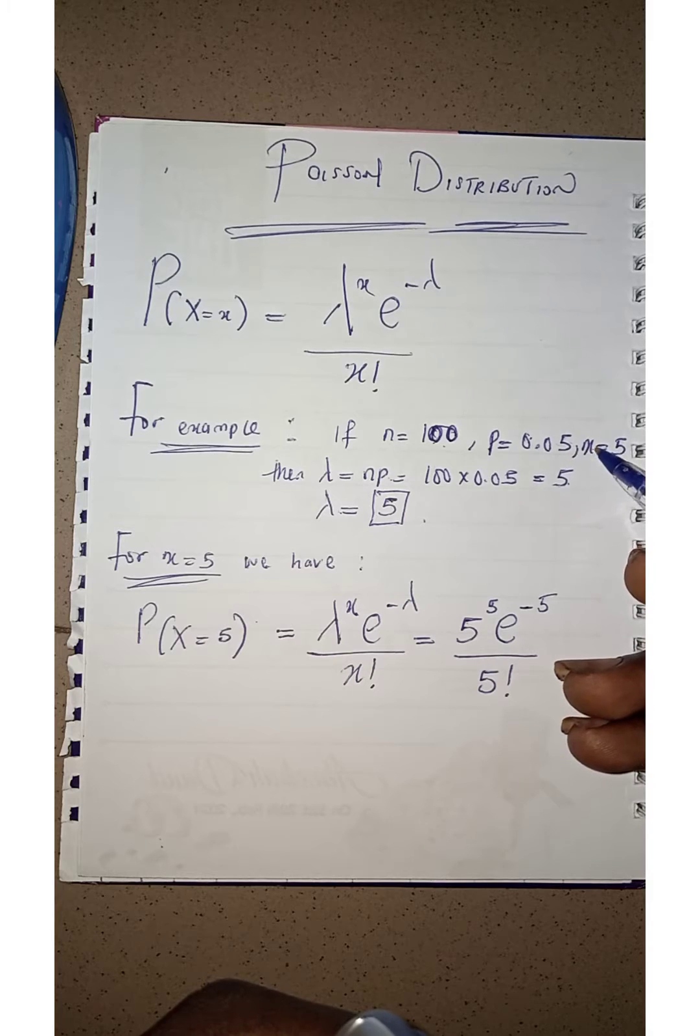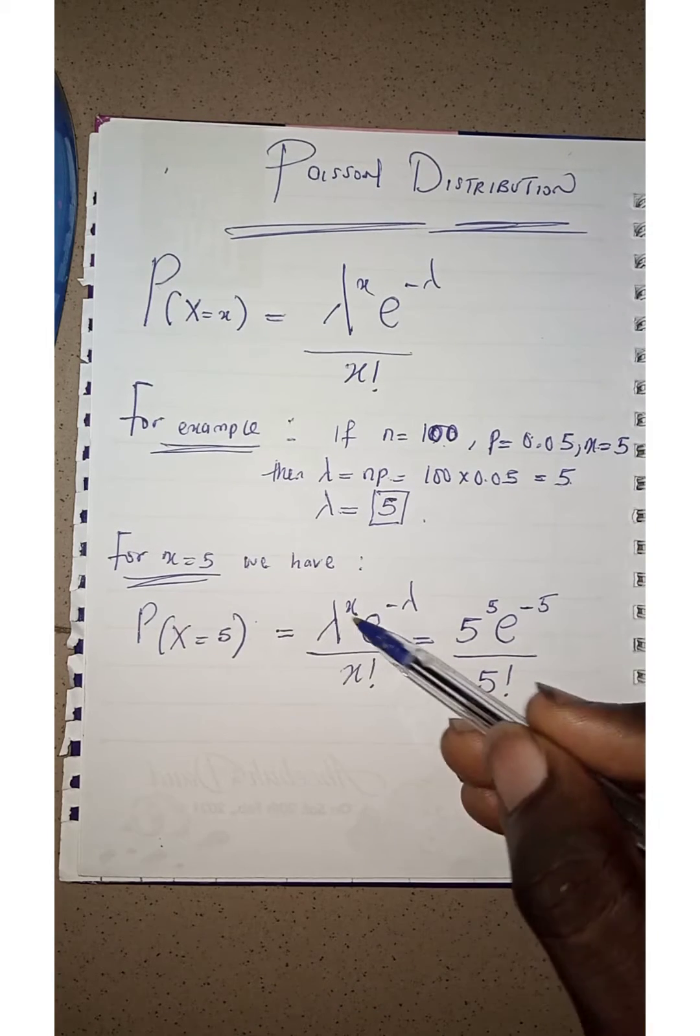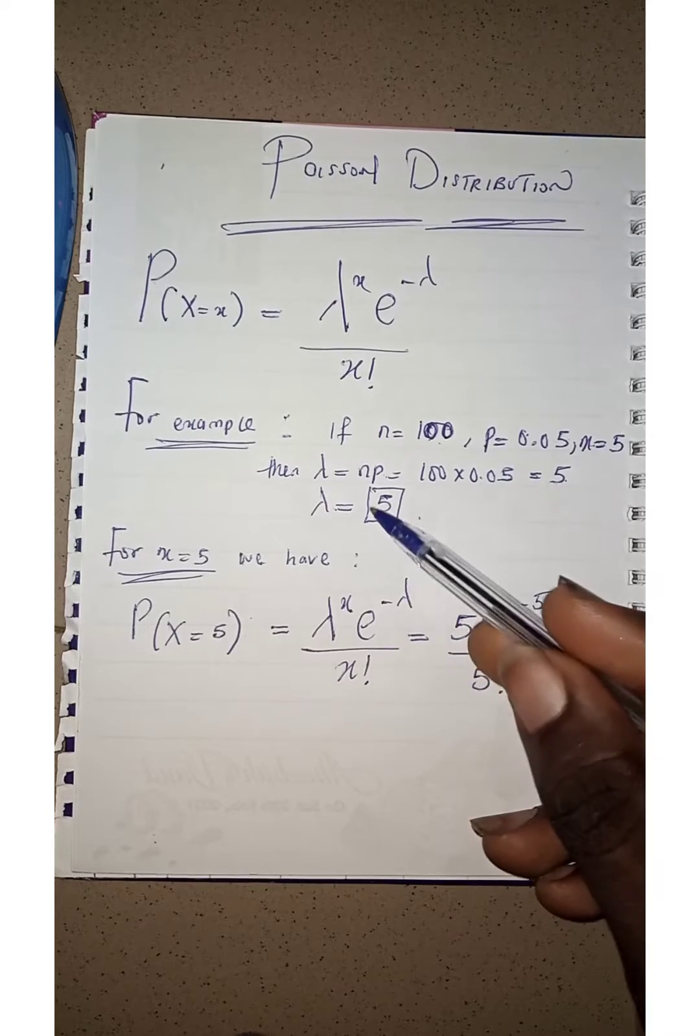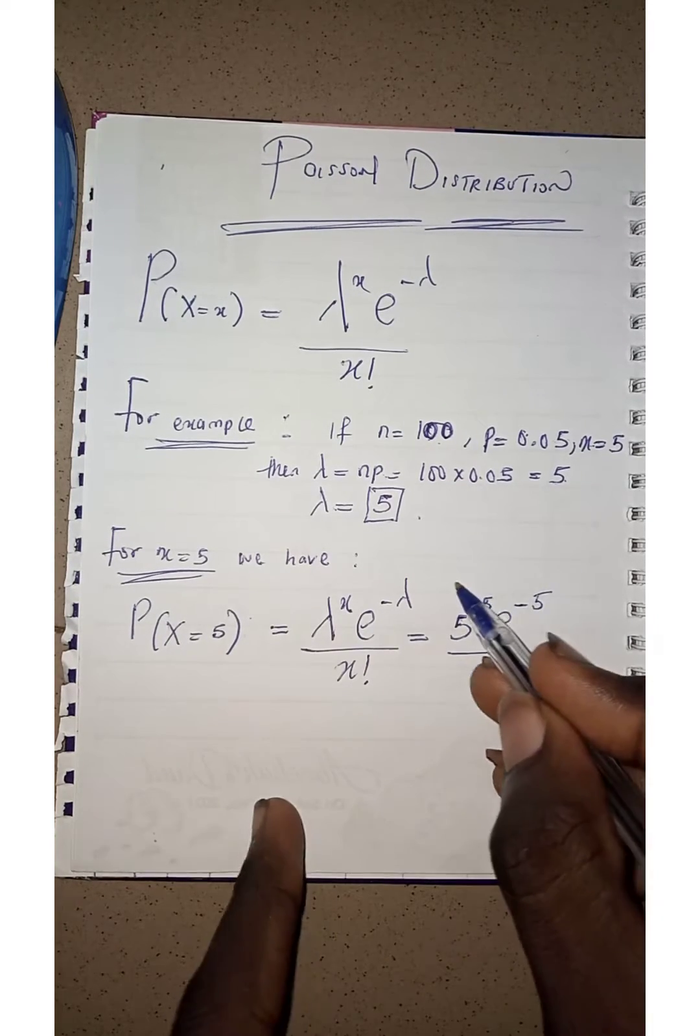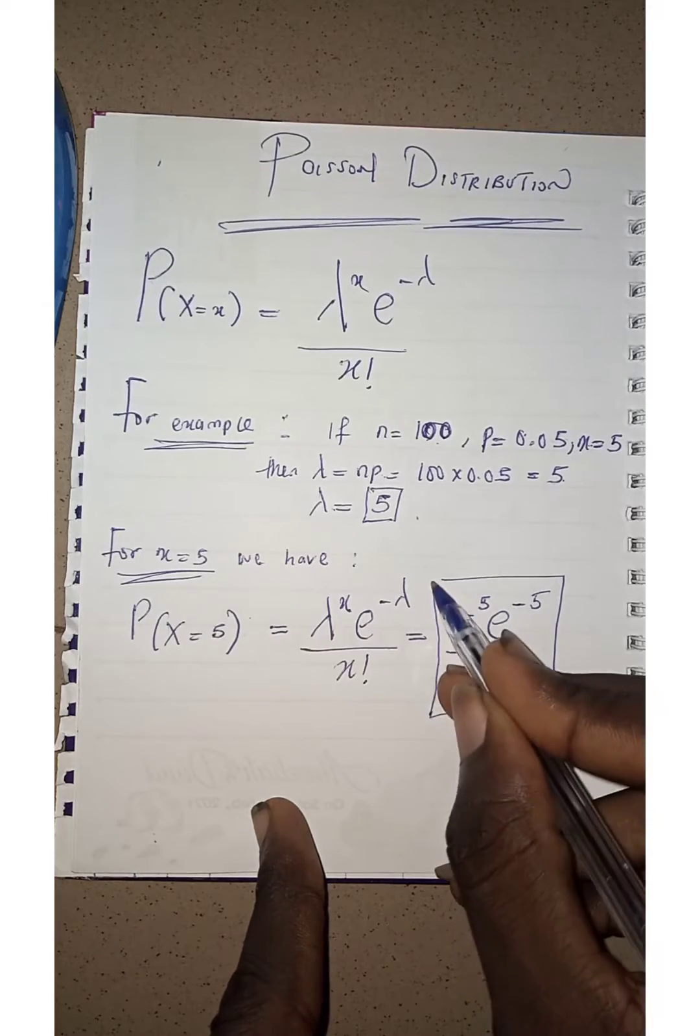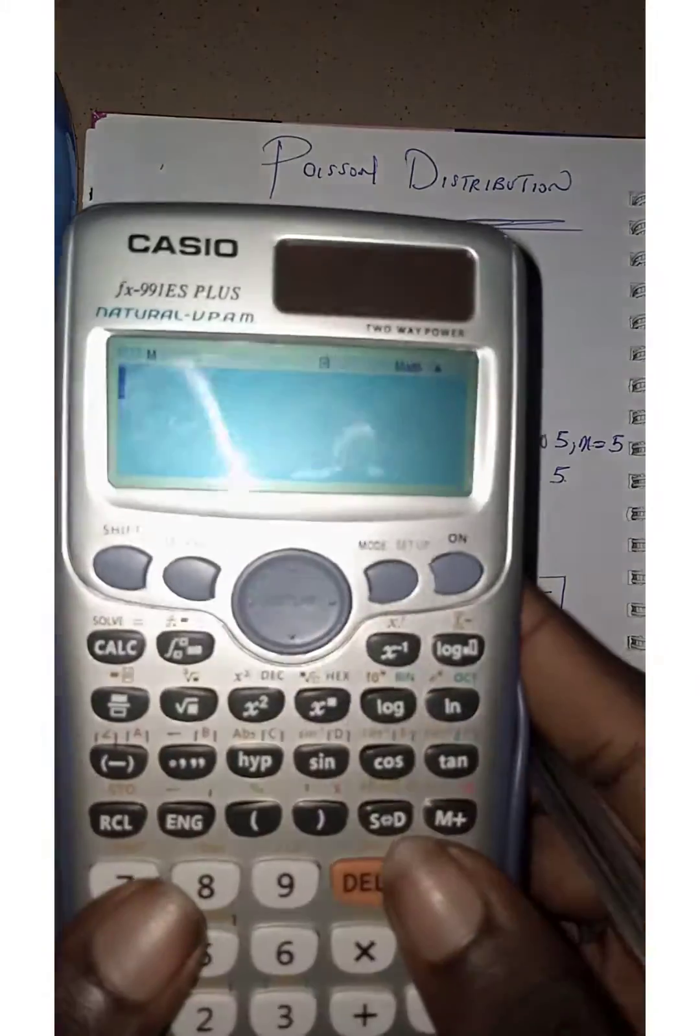And let's make an assumption when x is 5. When x is 5, that implies that wherever I see this lambda, I put 5. Since lambda is 5, and wherever I see x, since x is 5, I will put 5. So I want to press this expression here into this calculator.